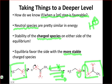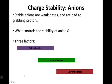So in thinking about the stability of charged species, we really need to focus on the stability of cations, positively charged species, and anions, negatively charged species. Let's start with anions.